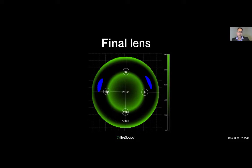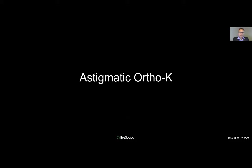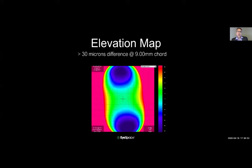That's the essence of designing the Forge OrthoK lens. Let's have a quick look at astigmatic OrthoK fitting. With OrthoK toric fits, we need to be aware of the elevation difference over the horizontal and vertical meridians. If the elevation difference over a 9mm chord is more than 30 microns, there's enough difference for a toric lens to lock into position. If less than 30 microns, stay with a rotationally symmetric lens.